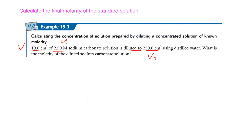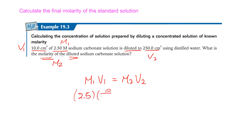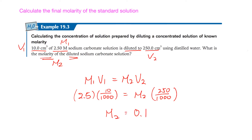This one will be the final volume, V2. Then V1 and M1 are the stock solution values. We need to calculate the molarity of the diluted one, so we are looking for M2. Using M1V1 = M2V2, M1 will be 2.5, V1 will be 10/1000, and V2 will be 250/1000. By doing the conversion, you will find the molarity is 0.100 mol/dm³.